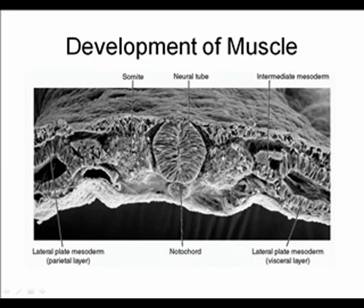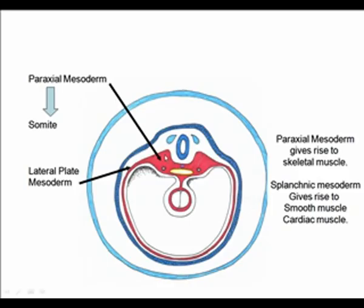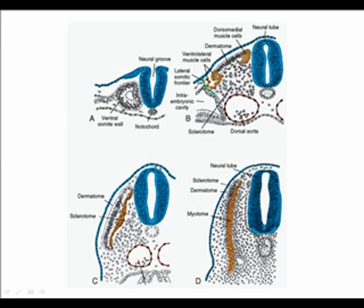Turning to muscle development and focusing on skeletal muscle: a cascade of events in the somite region leads to skeletal muscle formation. The neural tube, notochord, and somite interact, with the somite dividing into the dermal myotome and sclerotome. The dermal myotome forms the dermatome and, at either end, the myotome that gives rise to skeletal muscle cells. The paraxial mesoderm on either side of the neural tube gives rise to the somites, and it is this paraxial mesoderm that ultimately gives rise to skeletal muscle.